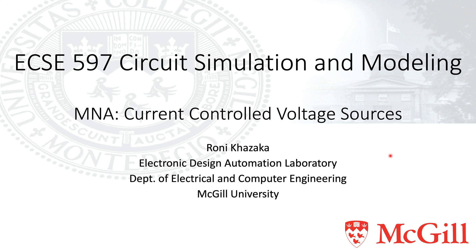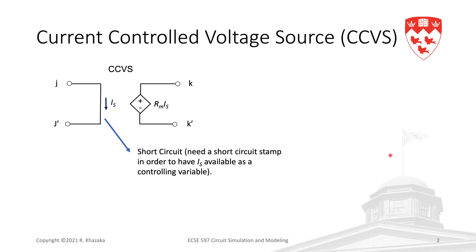In this video we are going to develop a stamp for current controlled voltage sources in the modified nodal analysis formulation. Here we have a voltage source whose value is controlled by current elsewhere in the circuit, so the voltage here is the transresistance rm multiplied by is, is being the current in another branch.